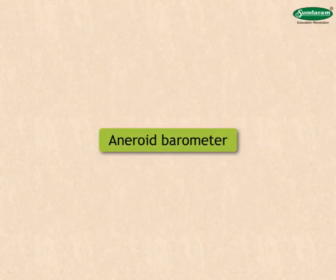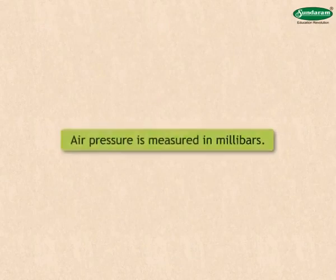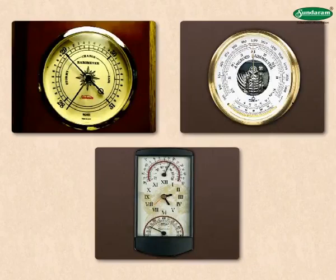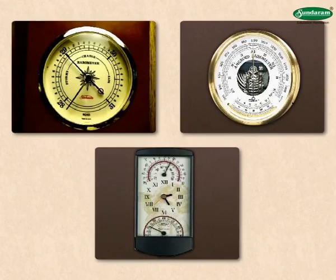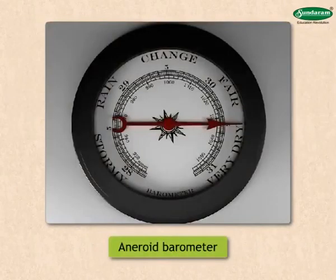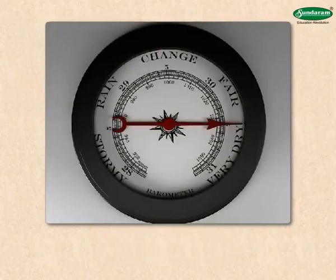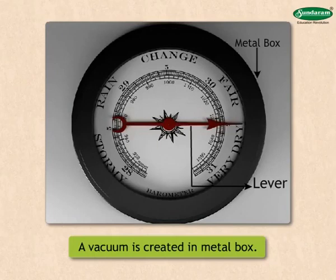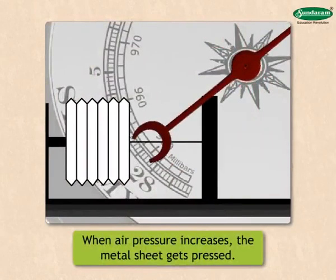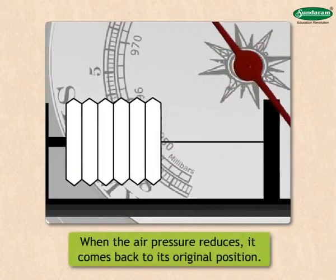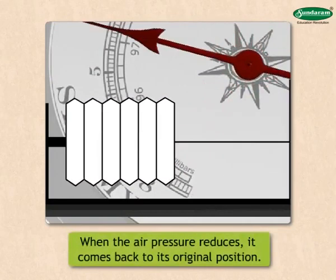Now let us see what is aneroid barometer. Air pressure is measured in millibars. Various types of barometers are used to measure air pressure. Let us have a look at the aneroid barometer. In an aneroid barometer there is a metal box made of thin sheet. A vacuum is created in this box. When air pressure increases the metal sheet gets pressed and when the air pressure reduces it comes back to its original position.